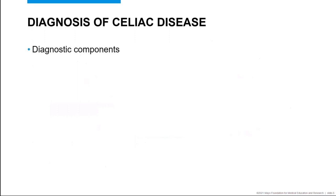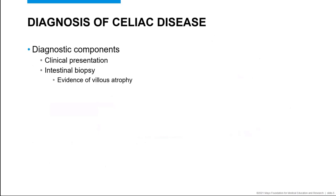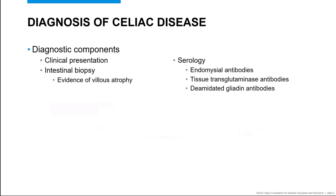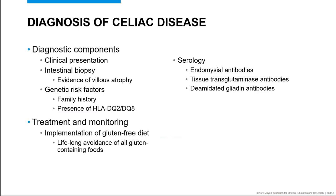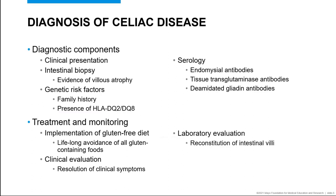The evaluation of a patient for suspected celiac disease includes a review of clinical symptoms and coexisting conditions, an intestinal biopsy with evidence of villus atrophy, serology testing for endomesial, tissue transglutaminase, and deaminated gliadin antibodies, and evaluation for the genetic risk factors, including family history and presence of HLA-DQ2 and DQ8. Treatment for celiac disease is implementation of a gluten-free diet. The goal of this treatment is to remove the inciting antigen. With a successful gluten-free diet, the patient should begin to see resolution of their clinical symptoms, which is often accompanied by reconstitution of the intestinal villi and conversion to a negative serology.